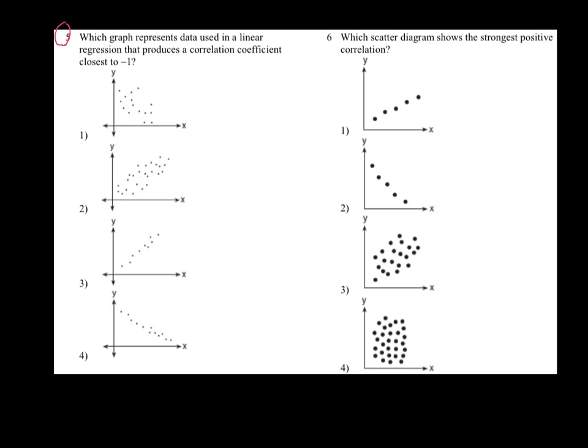Number five here, they're looking for a correlation coefficient as close to negative one as possible. So as soon as you see the negative one, we know we're trending downhill. So I'm going to kill choice two and choice three because those are trending in a positive direction. Now, of the two remaining choices, negative one represents perfection, and I would say this one down here is very close to being perfectly in a row. So I chose choice four.